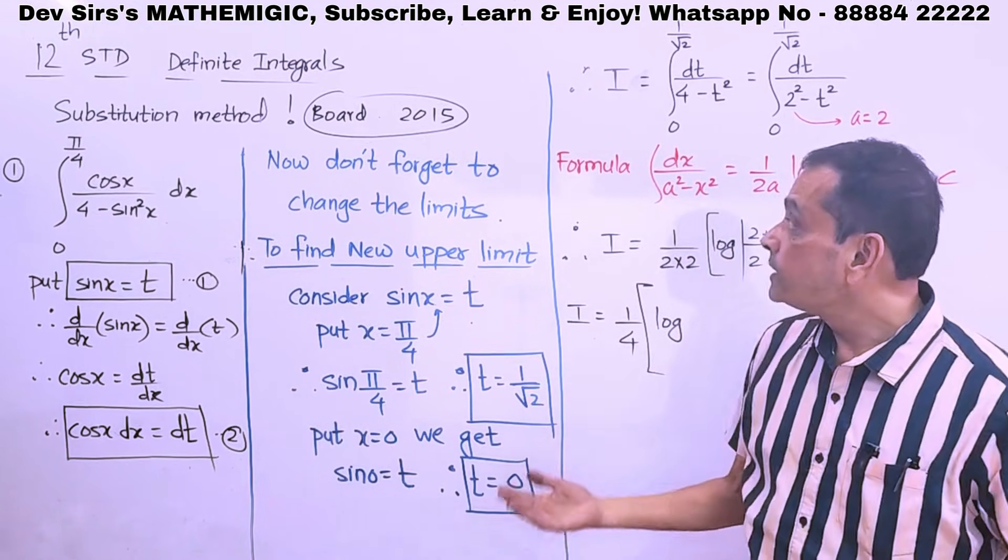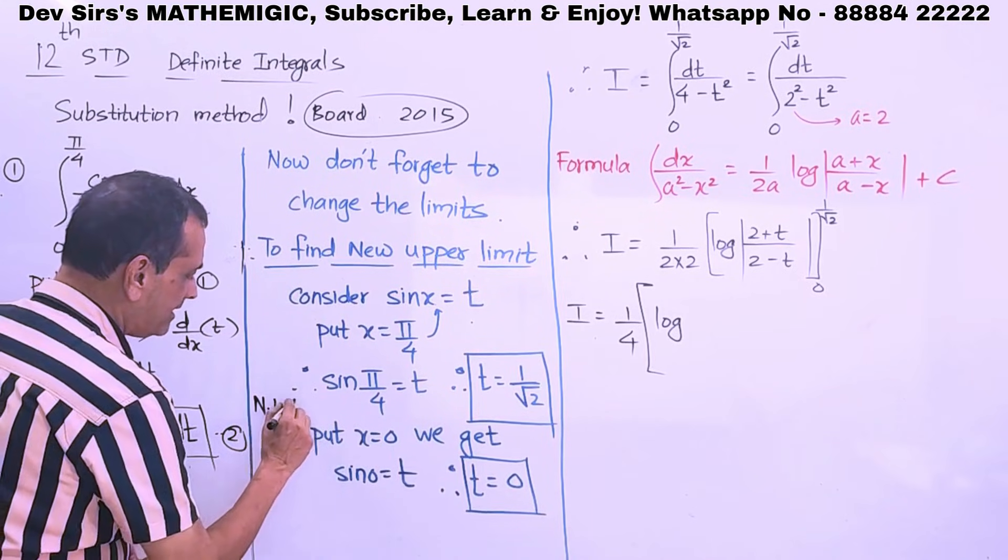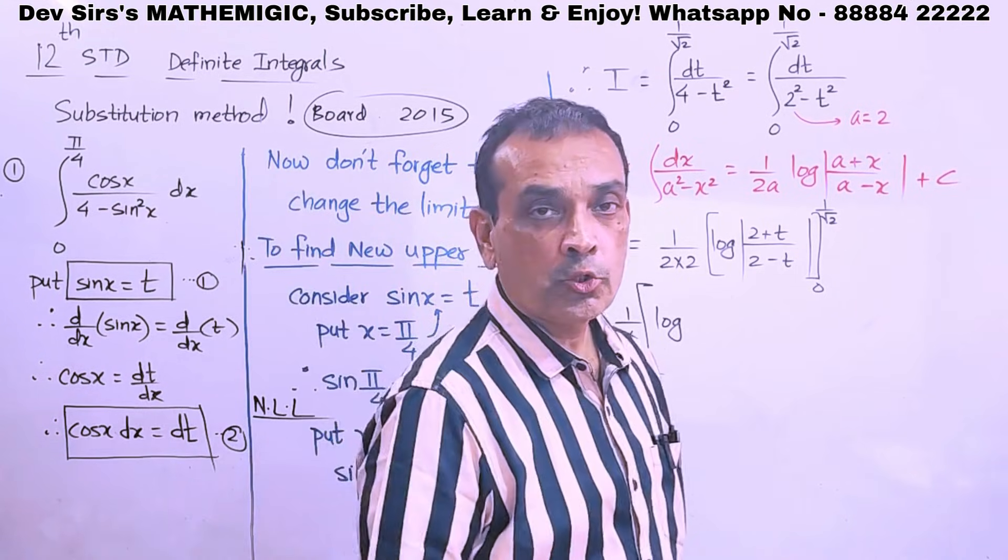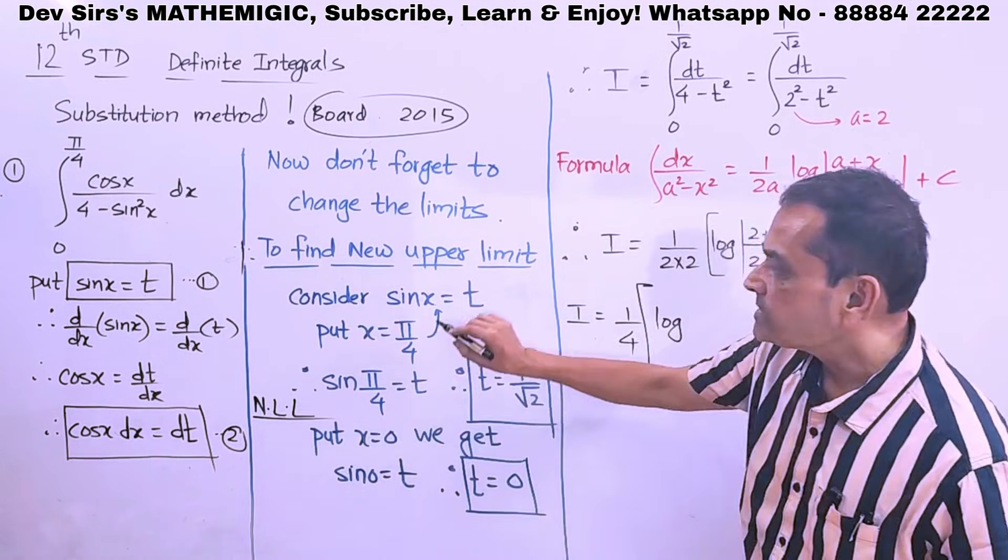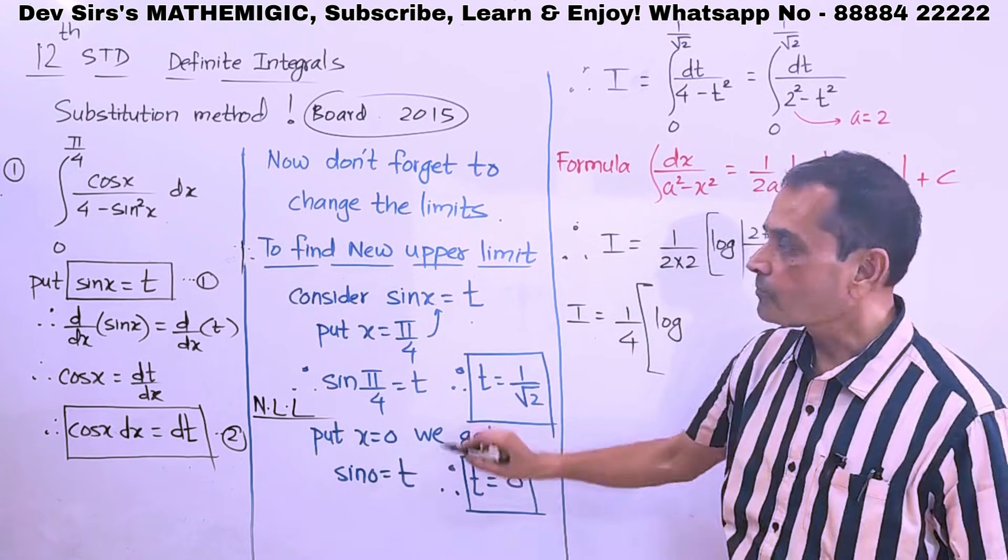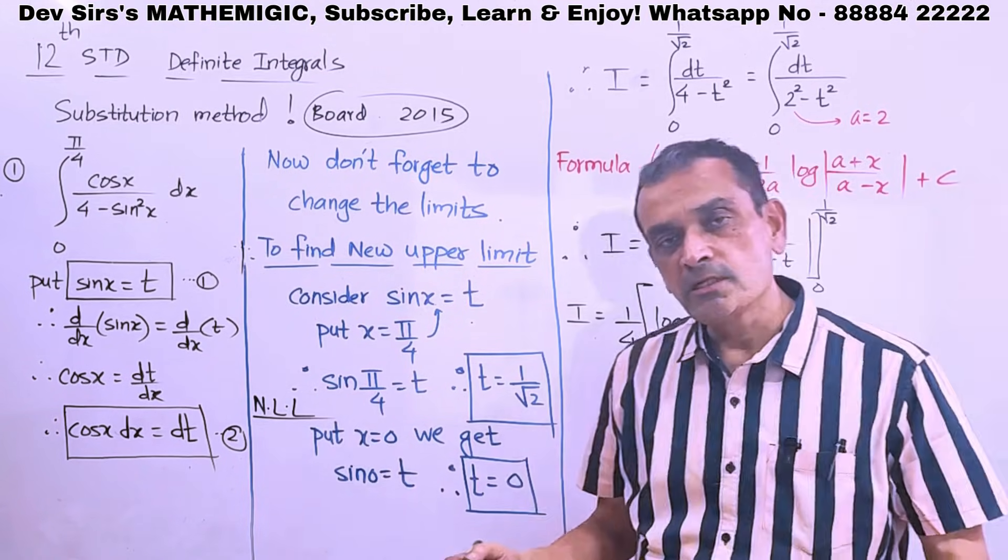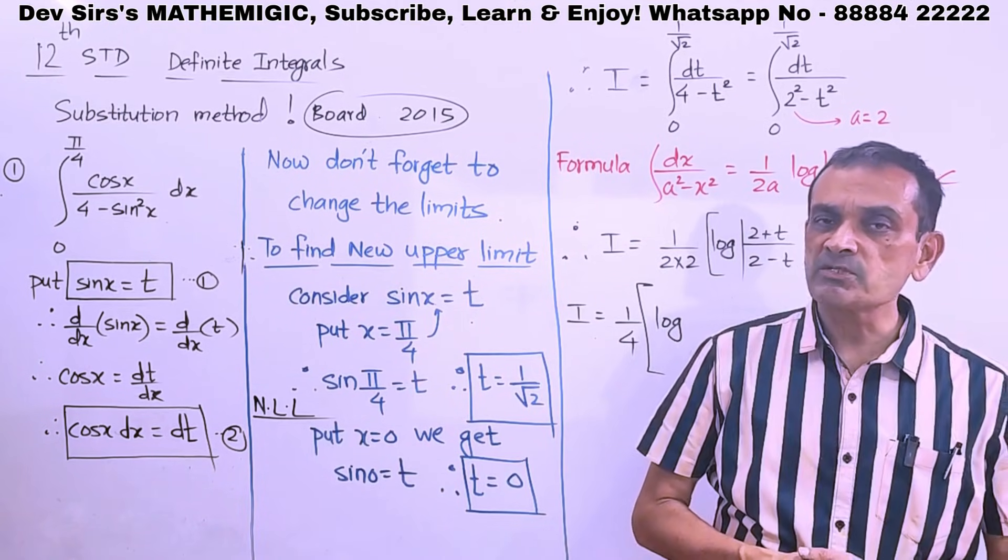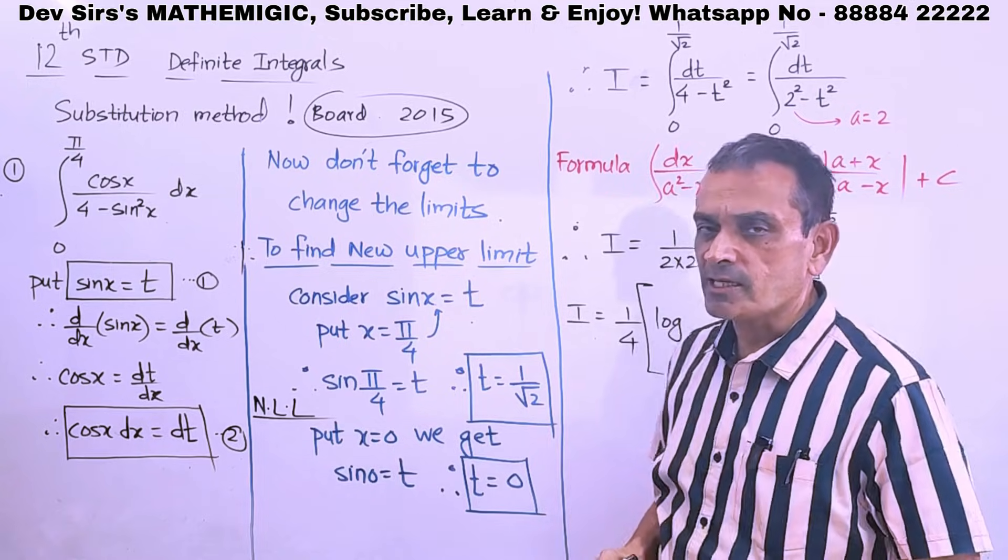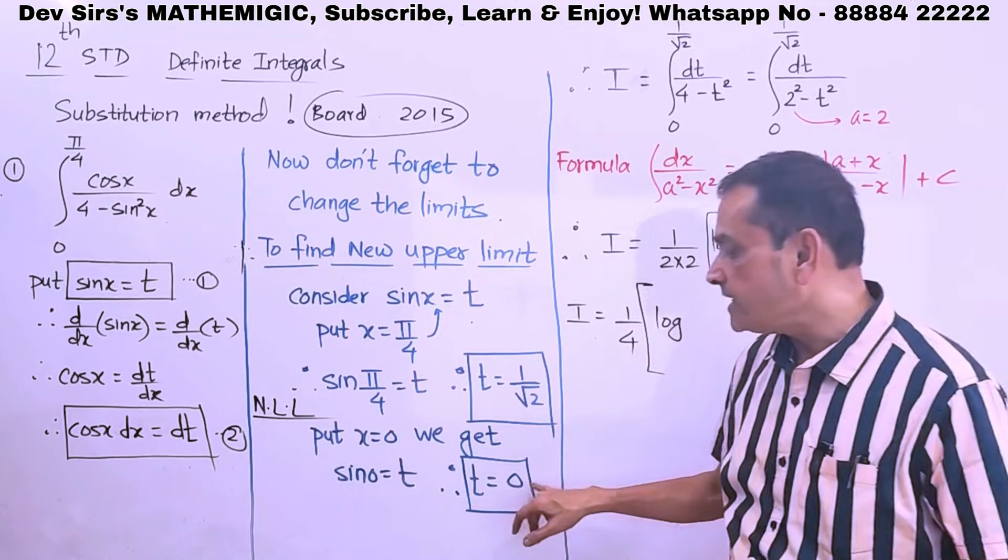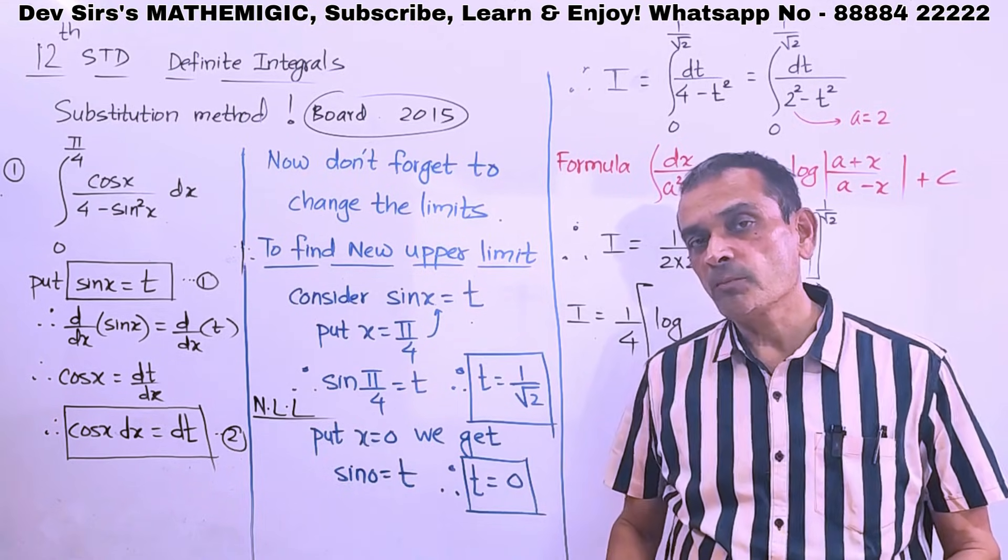Now, what will be the method for finding the new lower limit? We have a new lower limit. New lower limit. To find the new lower limit, what do we do? Original lower limit x equal to 0. Substitute in the same equation. We get sin 0 equal to t. Substitute in that. Sin 0 equal to t. Sin 0 is 0. So, we get t equal to 0. That is the new lower limit. In most cases, we have seen that if old limit is 0, then new limit also maximum number of times is 0. Most of the times. So, these values of t, t is equal to 0 and t is equal to 1 upon root 2 have given us our new limits. Understood properly?